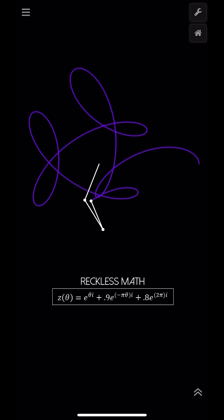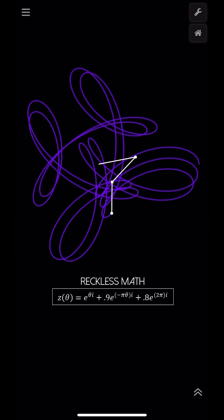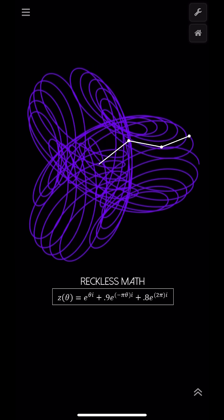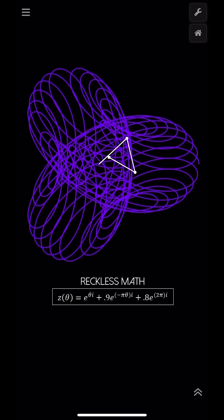I can't promise this is going to be the last one, but here is yet another visualization of the irrationality of pi. This time we're using three vectors instead of two, and the middle vector is rotating clockwise.